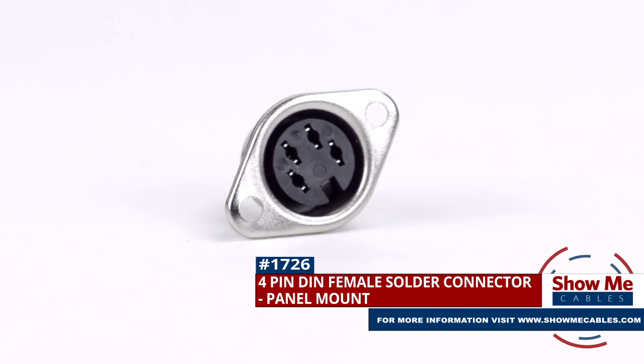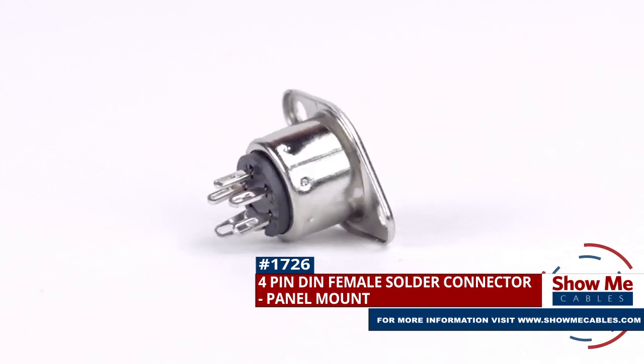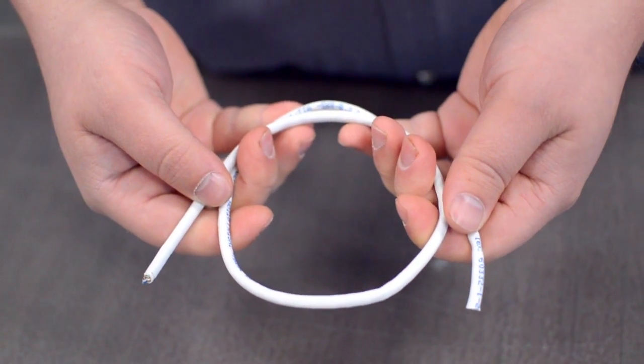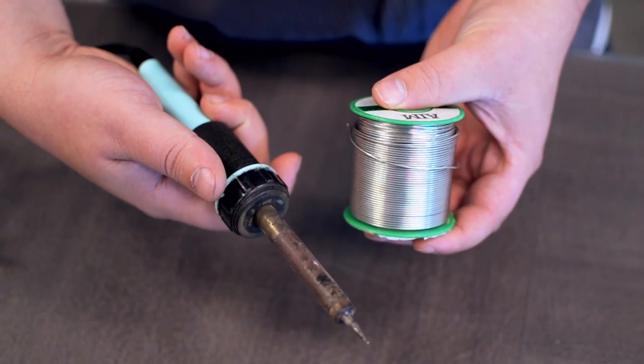This is the 4-pin female panel mount solder connector. To install, you will need the following items: low voltage cable, wire strippers, solder and soldering iron, and the DIN connector.